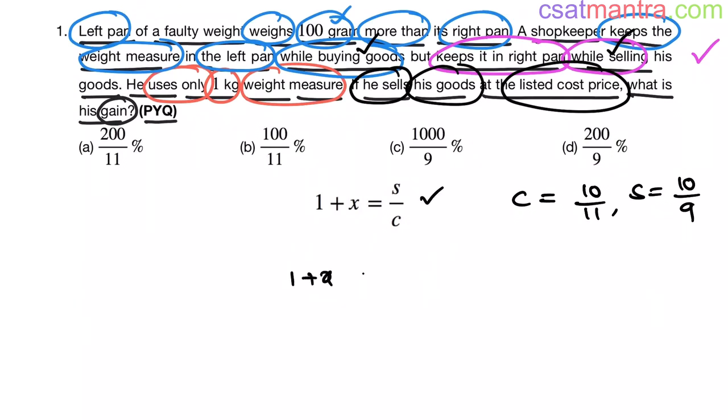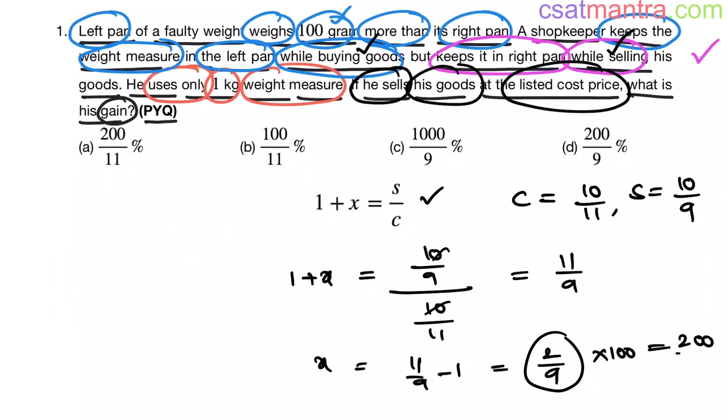1 plus x is equal to s is 10 by 9 whole by 10 by 11. 10, 10 gets cancelled, 11 by 9. So x is 11 by 9 minus 1. This is 2 by 9. Now I want to convert this into percentage. So I have to multiply with 100. This is 200 by 9 percentage. So our answer is D.